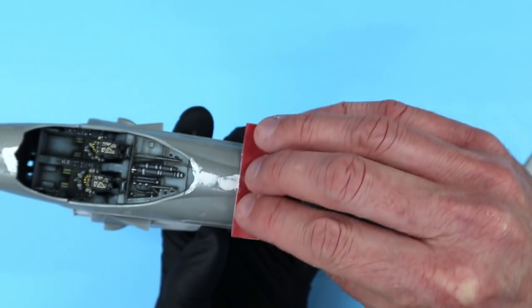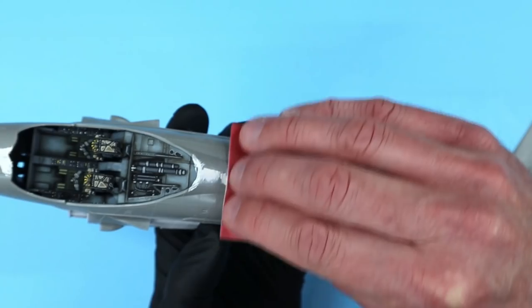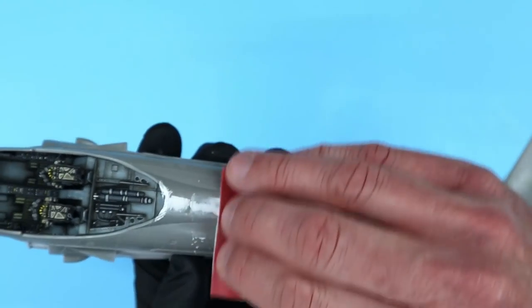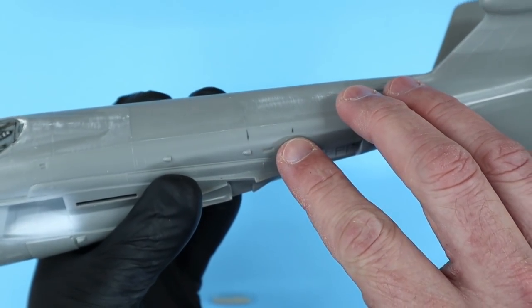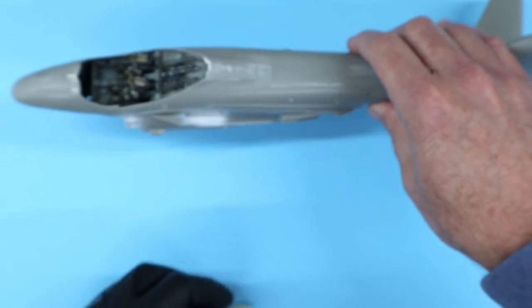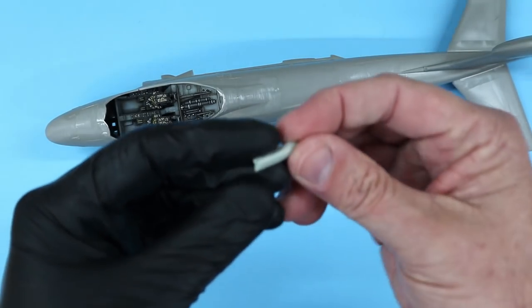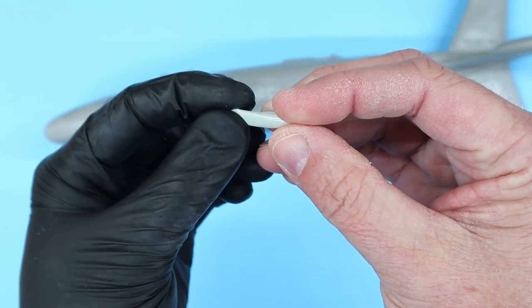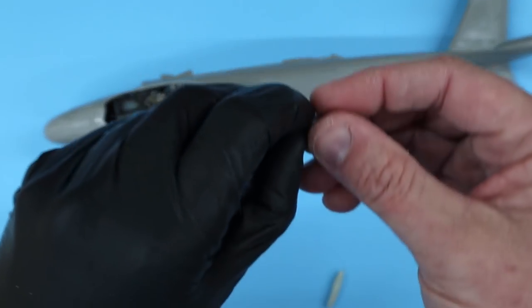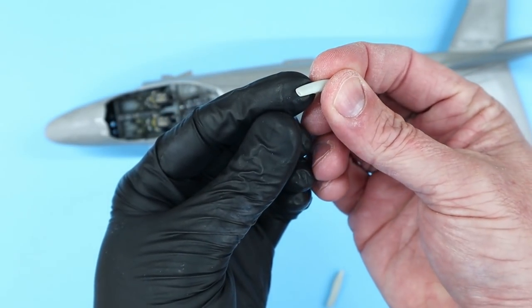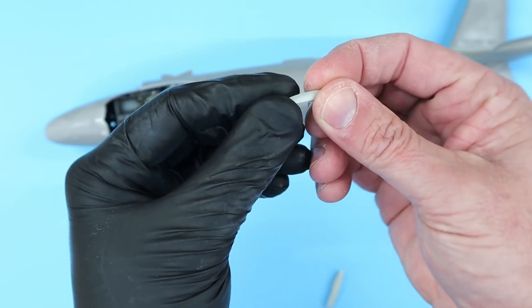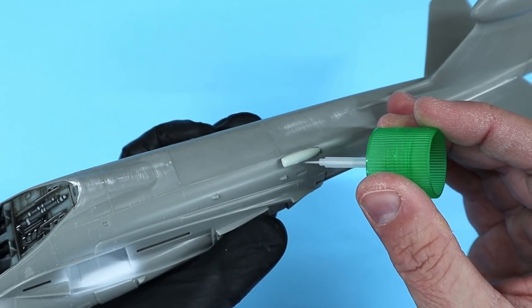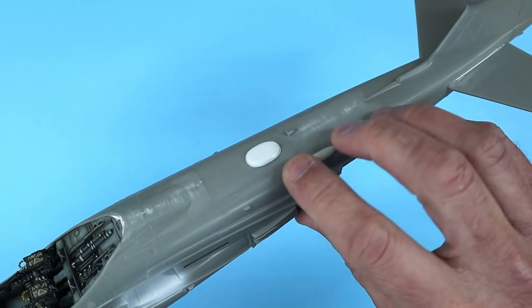Now that the putty on the fuselage seams had dried, I sanded those areas down with various grits of fine sandpaper to get a smooth finish. One of the downfalls of buying used kits is sometimes they are missing a few components. In my case, this included a fuselage intake and dorsal antenna. I reworked an intake from an old 1/48th Monogram F-8 Crusader and scratch built the new antenna using sheet styrene. These were then installed to the appropriate locations onto the fuselage.